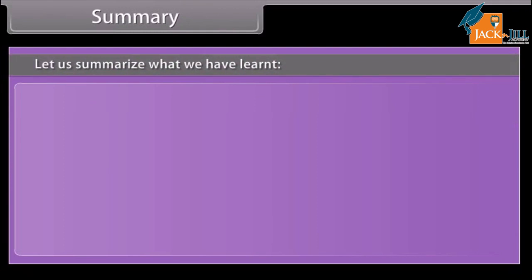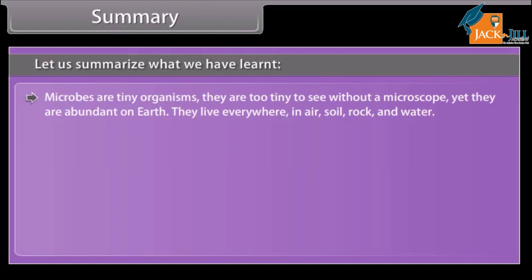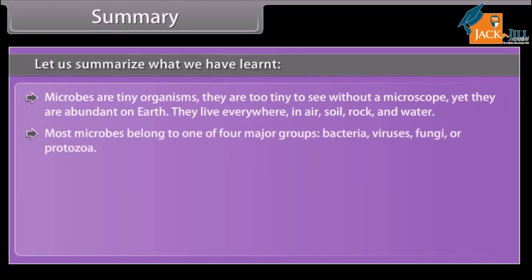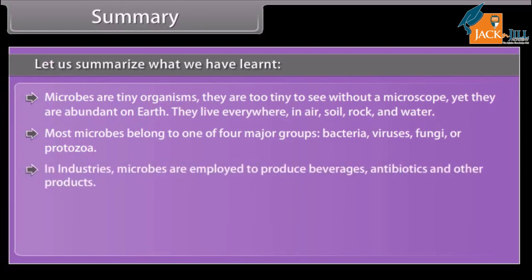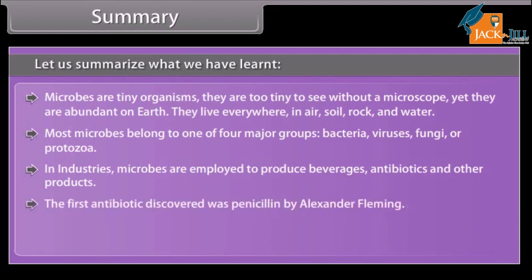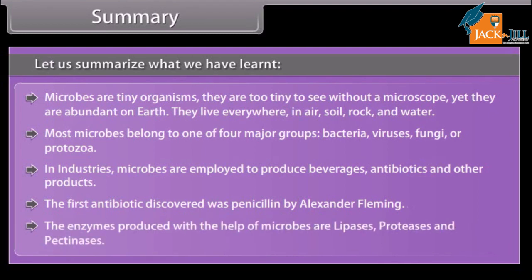Summary. Microbes are tiny organisms, too tiny to see without a microscope, yet abundant on earth. They live everywhere — in air, soil, rock and water. Most microbes belong to one of four major groups: bacteria, viruses, fungi or protozoa. In industries, microbes are employed to produce beverages, antibiotics and other products. The first antibiotic discovered was penicillin by Alexander Fleming. The enzymes produced with the help of microbes are lipases, proteases and pectinases.